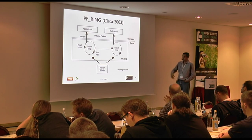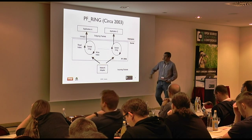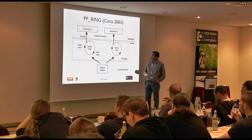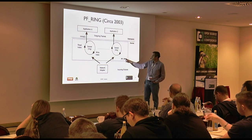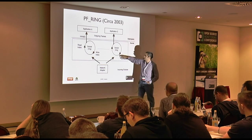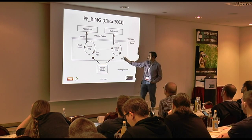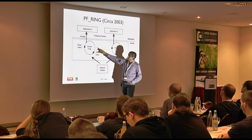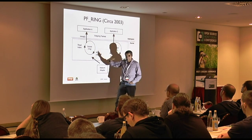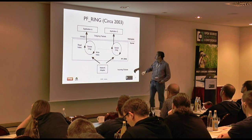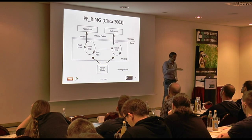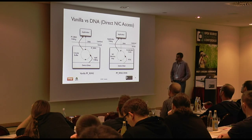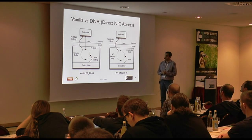PF_RING at the bottom of our system allows you to capture packets at high speed through a new network kernel module, where 'ring' stands for a circular memory buffer where packets are copied and read from user space through memory mapping — very efficient. Again, this is an optional component. If you have it, it is faster; otherwise we use the standard packet capture system on your network.